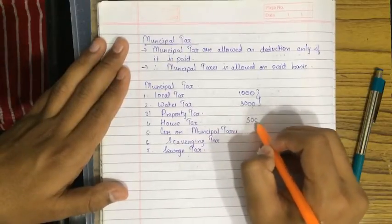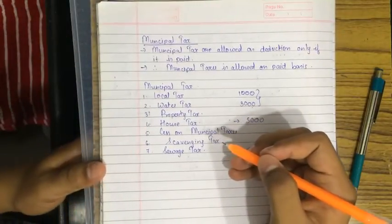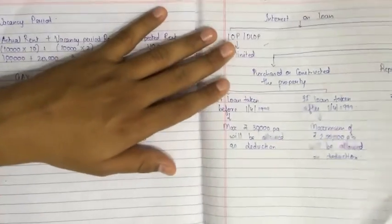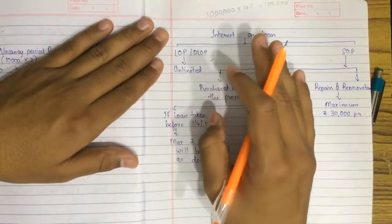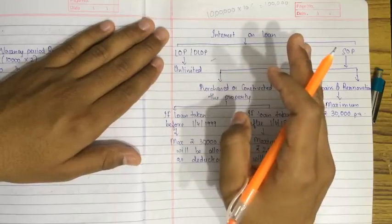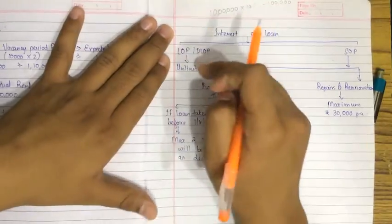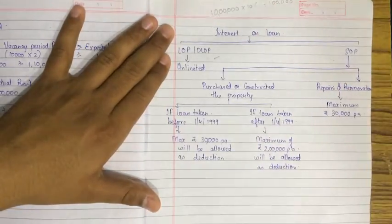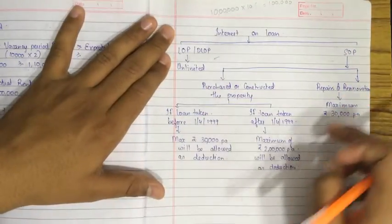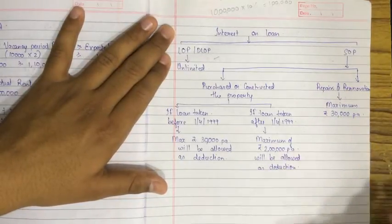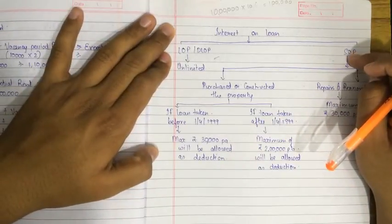For example, say 5,000 — just deduct 5,000 from the GAV and you'll get NAV. After that, do deduction under Section 24 and calculate interest on loan. If it is a let out property or deemed let out property, however much interest you have paid to the financial institution will be allowed as deduction. If you are self-occupied, such limits apply because you have not earned any income from the house property, and this benefit of set-off is given for that reason.